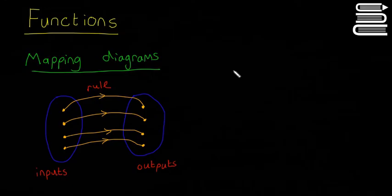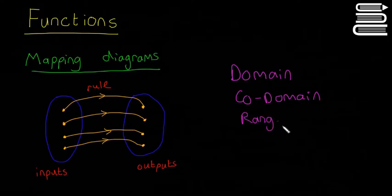But first we're going to talk about these three things. So we're going to talk about the domain, the co-domain and then the range. So these are three words you'll hear quite often. You just really need to know the definitions of them.